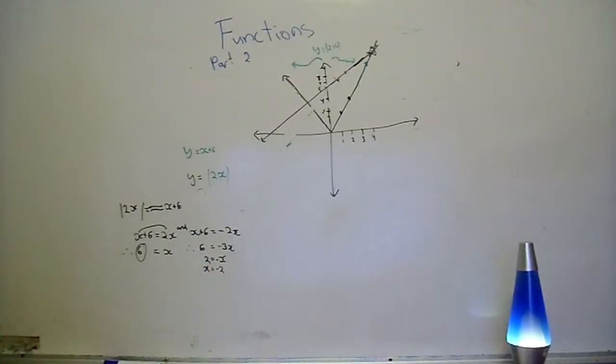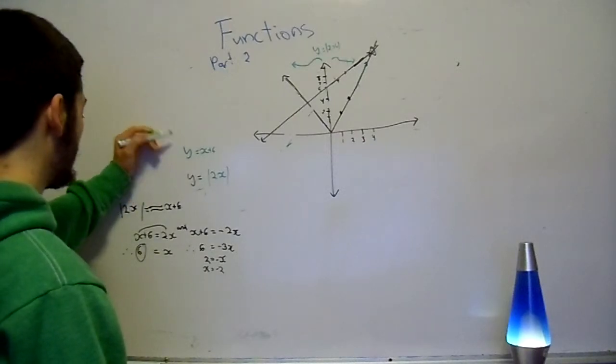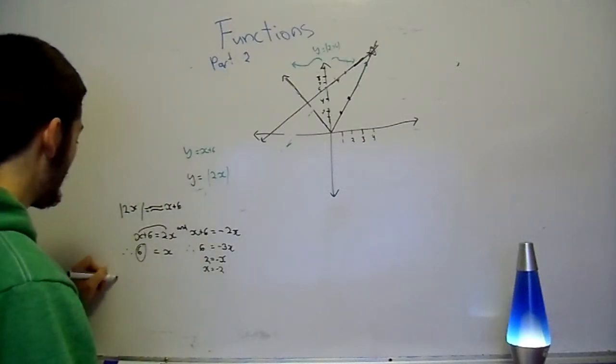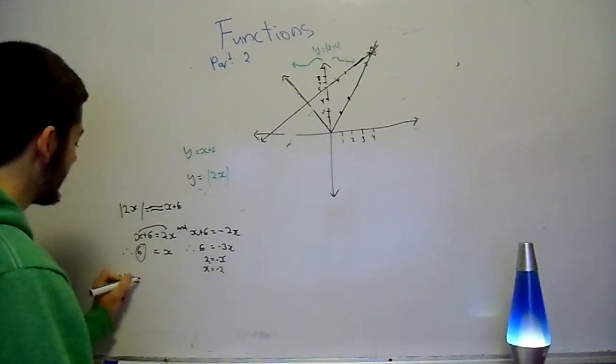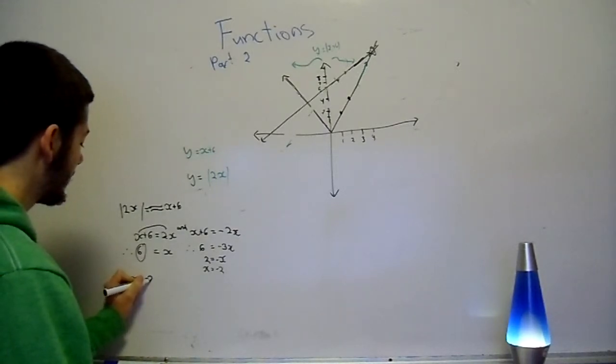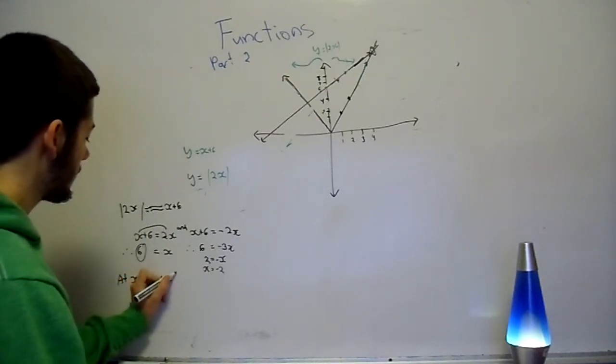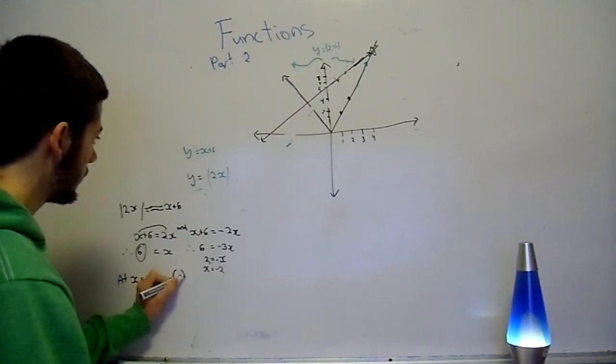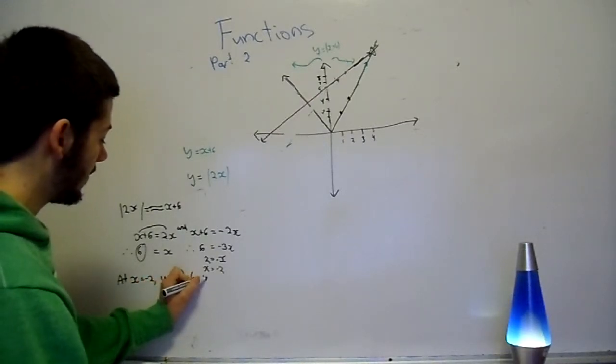Alright? Now we can just put this back into our equation here. So, at x equals minus 2, comma, y is going to be equal minus 2 plus 6, which is going to be equal to 4.